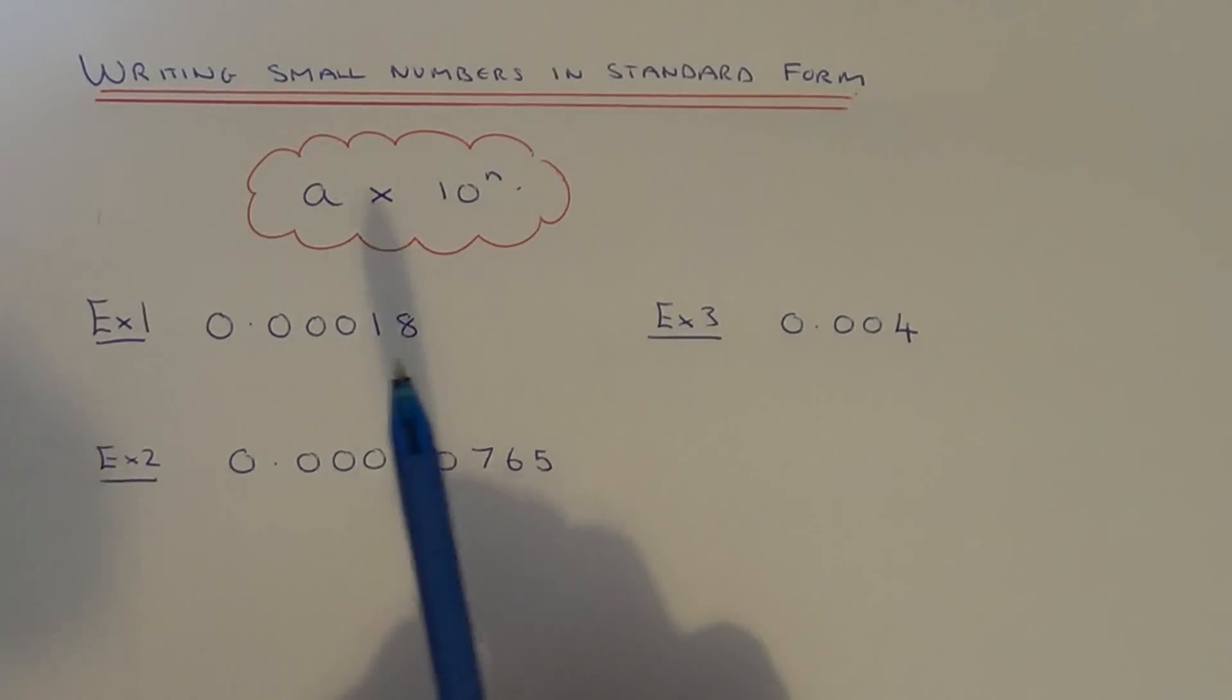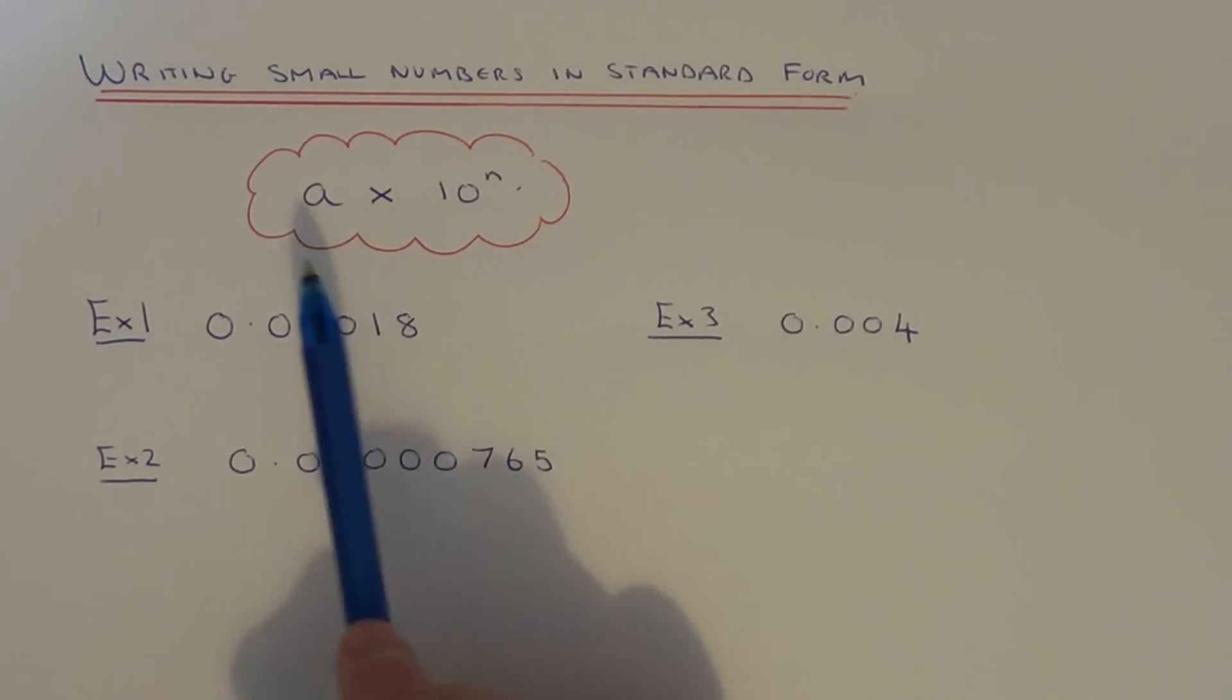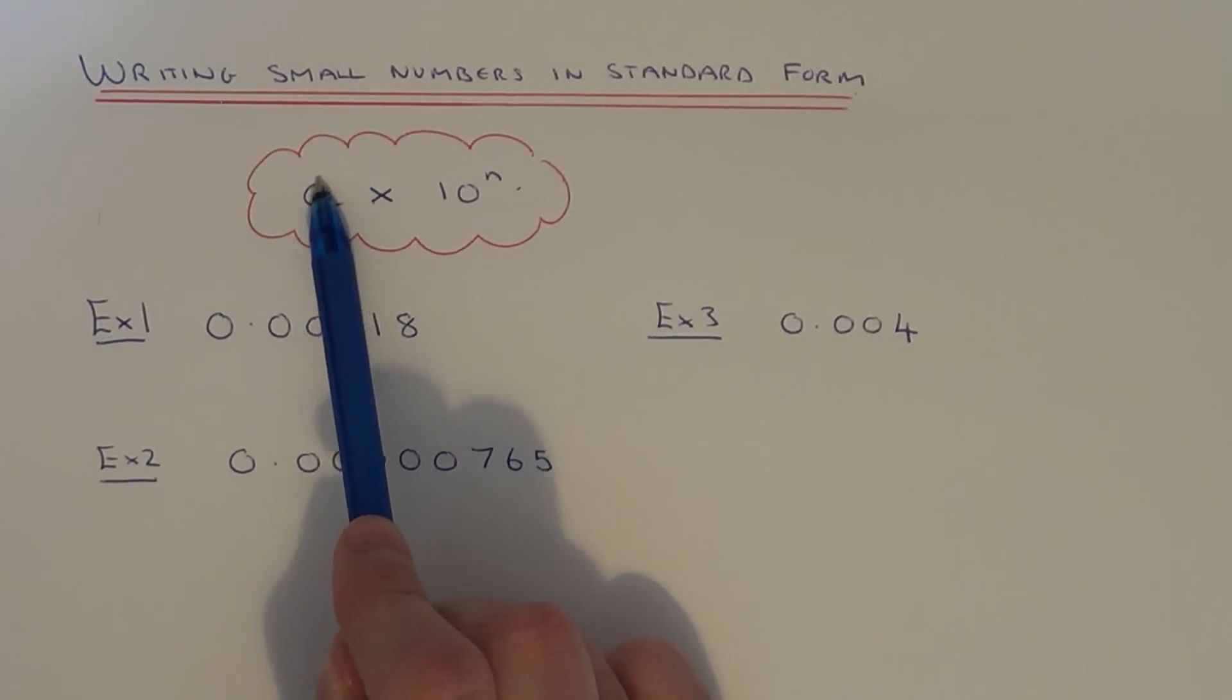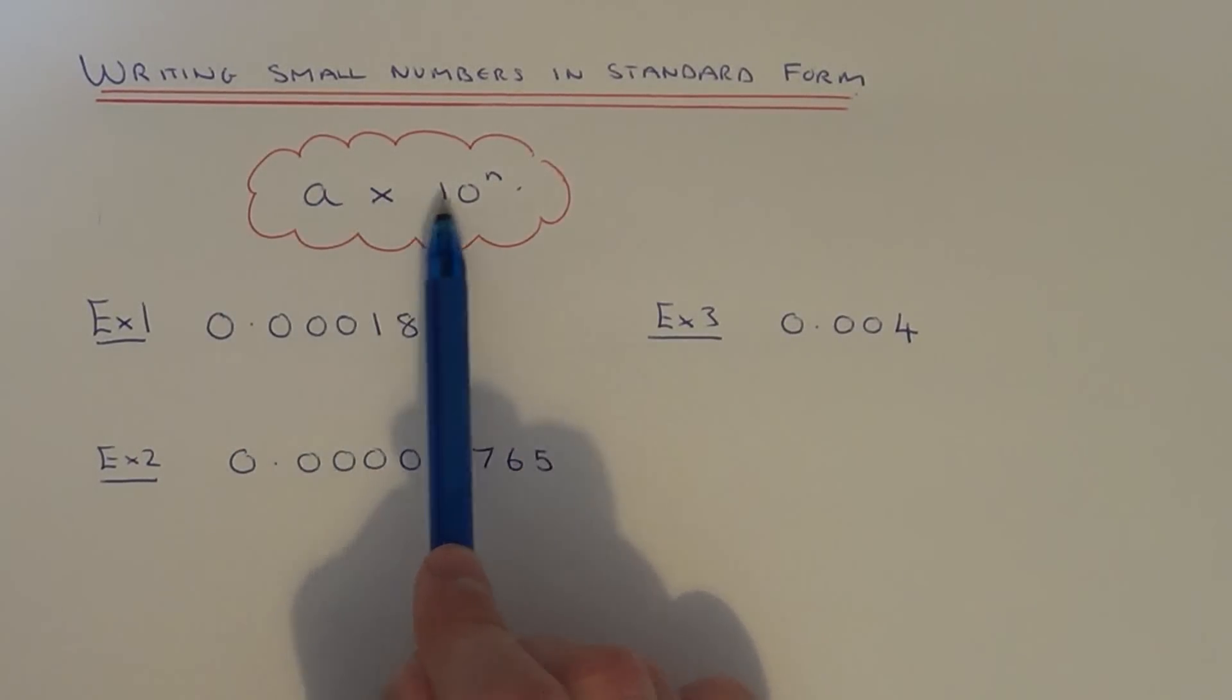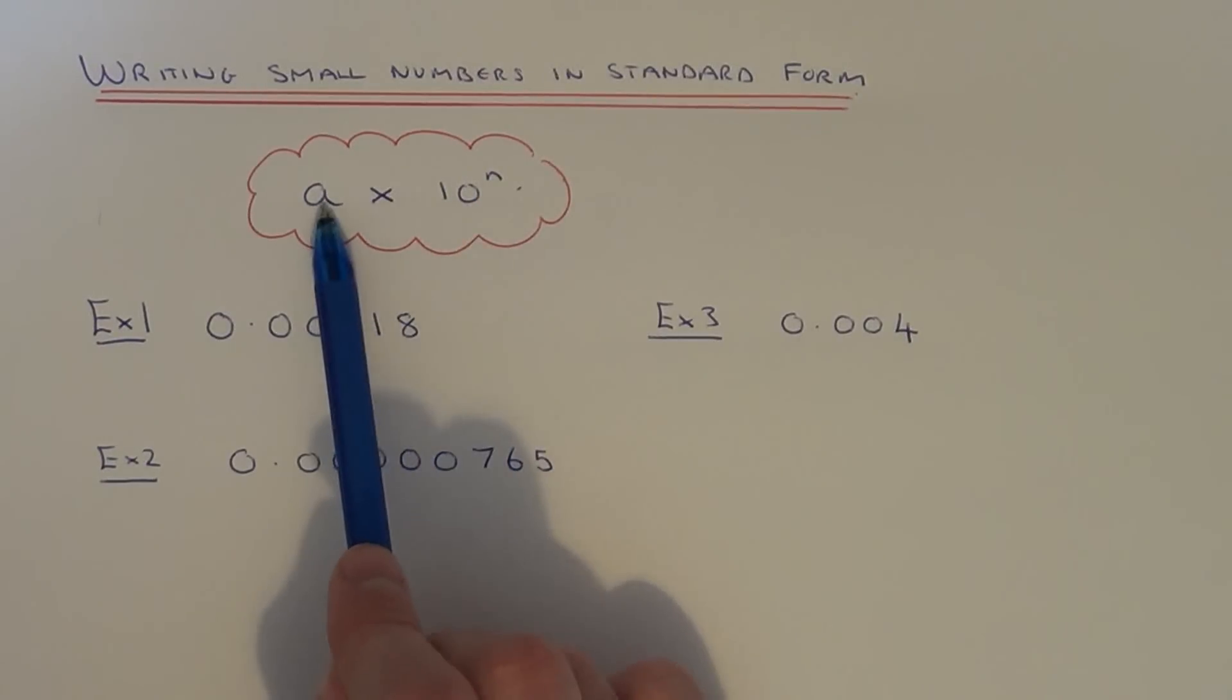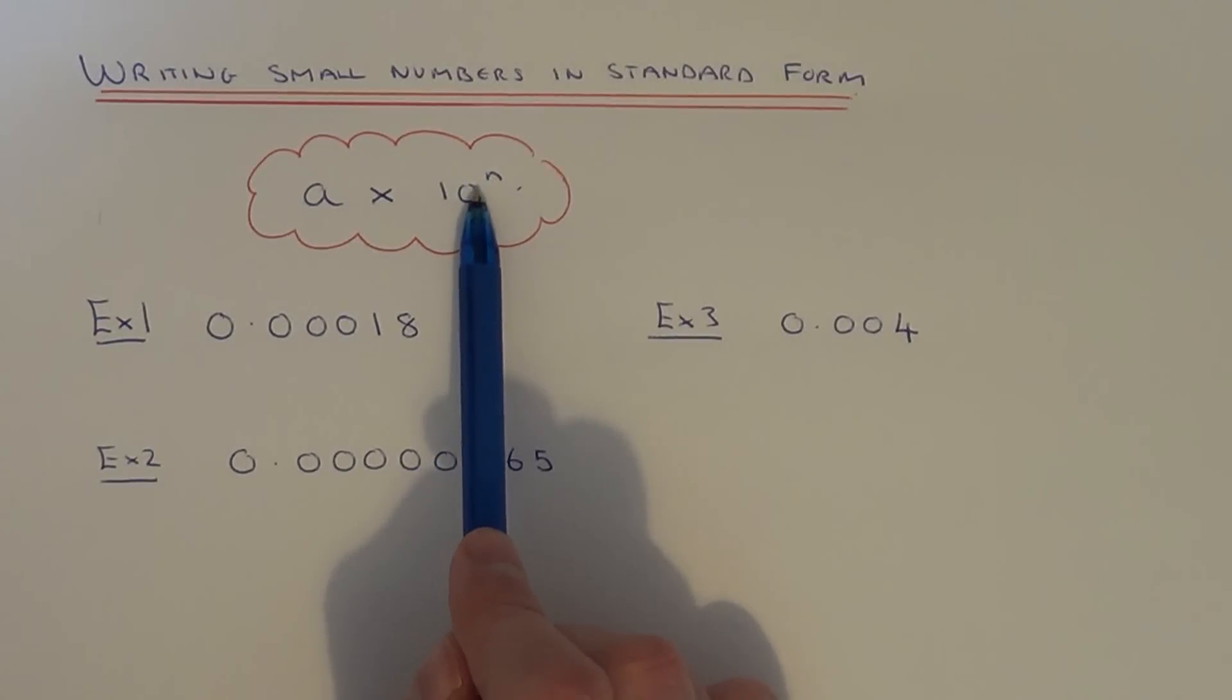Alright, so let's just quickly remind you, a number in standard index form will look like this. We've got a times 10 to the power of n. A is a number between 1 and 10, and then you've got the times 10 to the power of n, so it's the amount of times you multiply this number by to give you the original number.